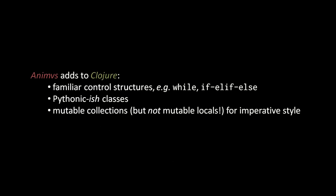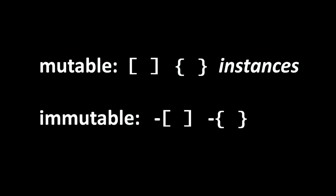To accommodate the style of programming JavaScript and Python programmers are used to, Animus adds three basic things to Clojure. There are closer analogs to the usual control flow structures like while and if-else-if-else — these don't supplant the traditional Lisp control flow structures but supplement them for familiarity's sake. More significantly, Animus also has a class mechanism modeled after Python's classes. And finally, probably most importantly, the collection types in Animus are by default mutable rather than immutable. If you want to create an immutable collection in Animus you use the same syntax but precede it with a hyphen.